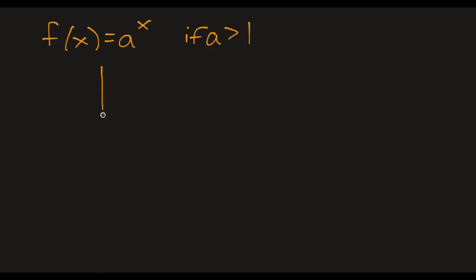So the general graph, if we have f of x equals a to the x, looks something like this. The a is going to affect how steep this is, and it's going to go through the point (0,1). This is all if a is greater than 1. It goes this direction.